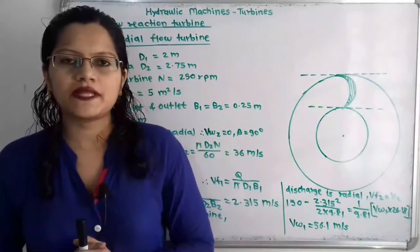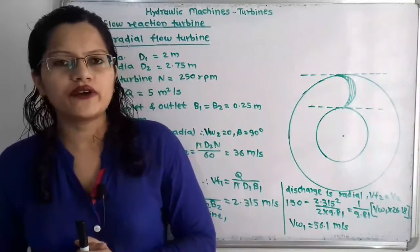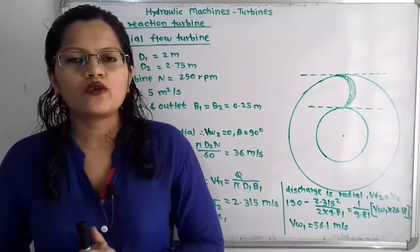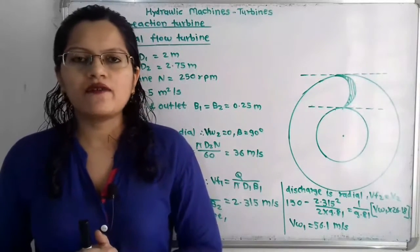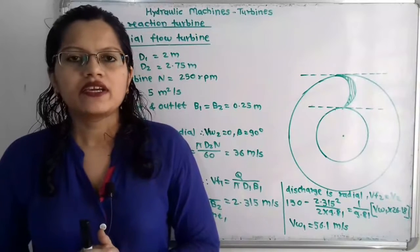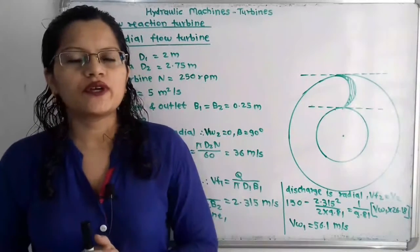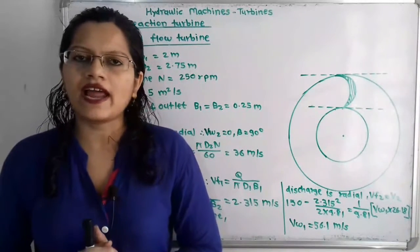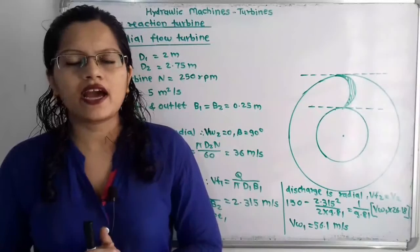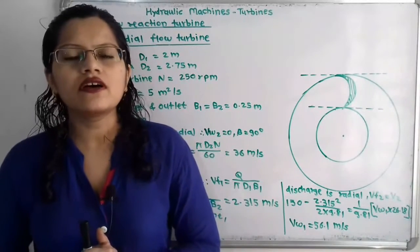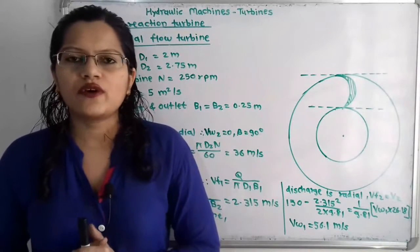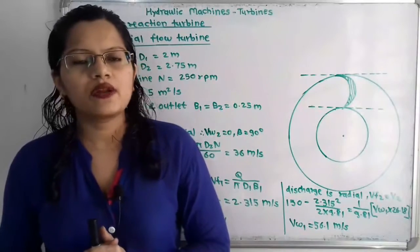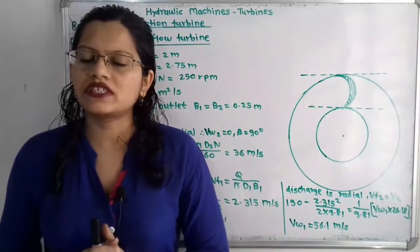Hello friends, this is Priyanka. Today we are going to solve a problem on outward radial flow reaction turbine. In this video, we are going to find out the vane angle at inlet and outlet, as well as the velocity of flow at inlet and outlet with the help of velocity diagrams.